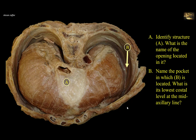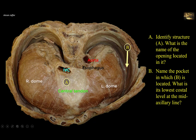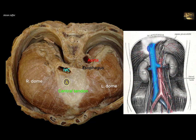Identify structure A. What is the name of the opening located in it? This is a transverse section of the thorax giving a view of the diaphragm from above. Note the two muscular domes — the right and left — and the central tendon of the diaphragm in between, which appears whitish as it lacks muscle fibers and is formed of fibrous tissue. Passing through the central tendon slightly to the right is the inferior vena cava, with its opening at the level of T8. It is only the inferior vena cava that passes through the central tendon, so it will not be compressed when the muscular part contracts and descends during inspiration.